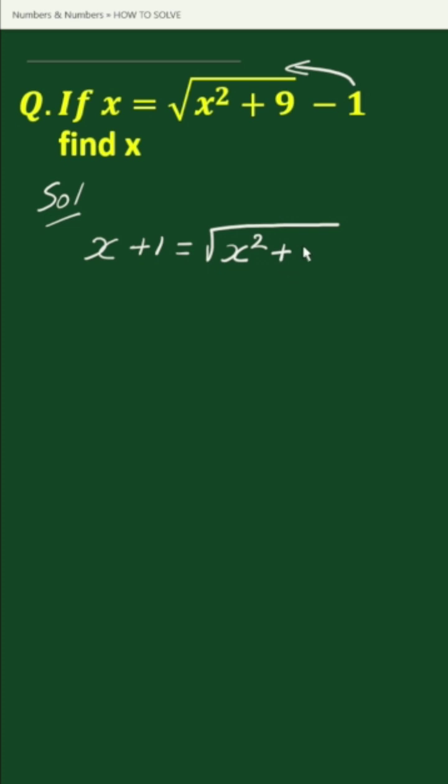On squaring both sides, we get x plus 1 whole squared equals square root of x squared plus 9 whole squared.